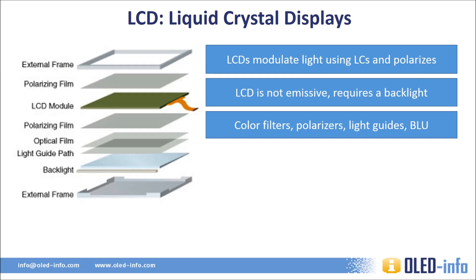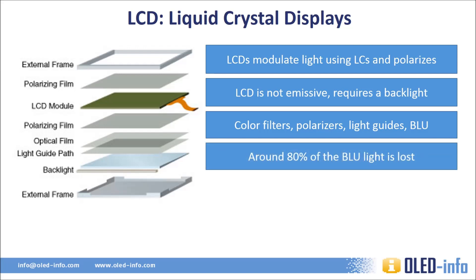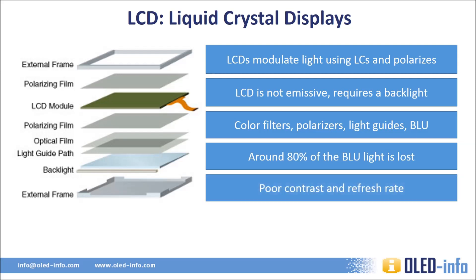An LCD has many required parts: the backlighting unit, polarizers, light guide, the liquid crystal film itself, and color filters. This makes it quite a complicated display, and it also means that around 80% of the original light from the backlighting unit is lost. In terms of picture quality, LCDs suffer from poor contrast, as even on totally black pixels there's light leakage from the backlighting unit, and very slow refresh rates. Viewing angles and color gamut have been historically poor, but have improved greatly in newer LCDs.